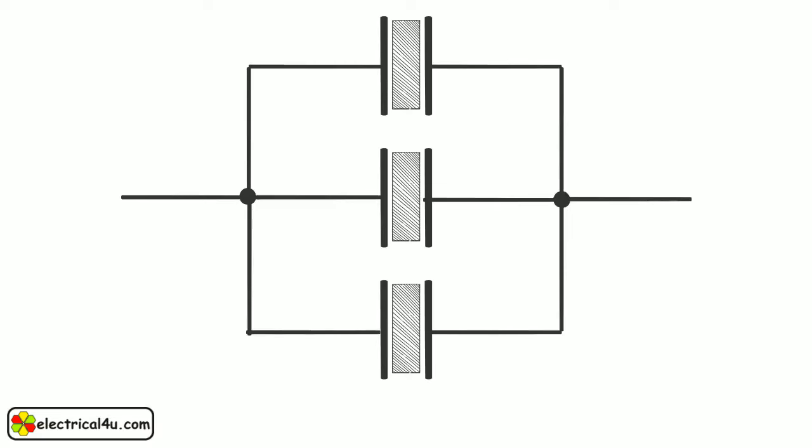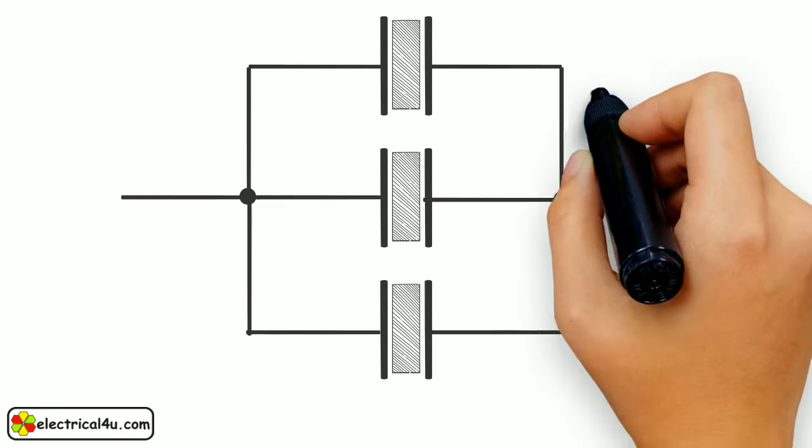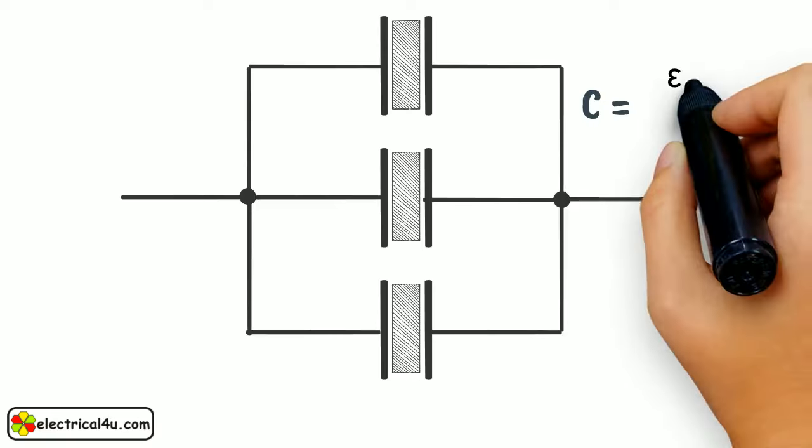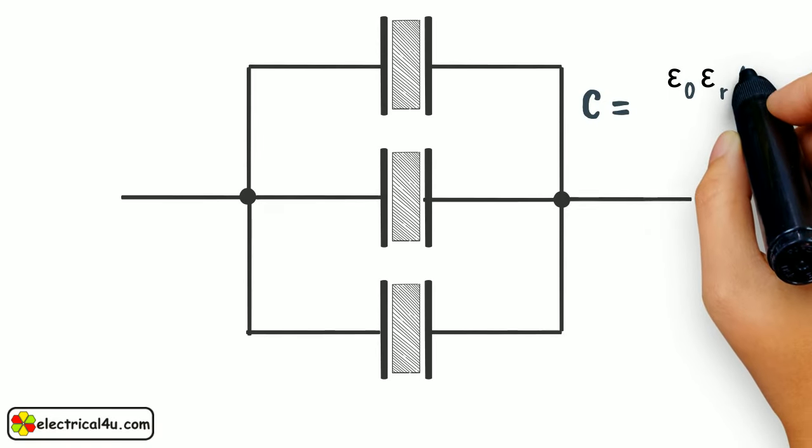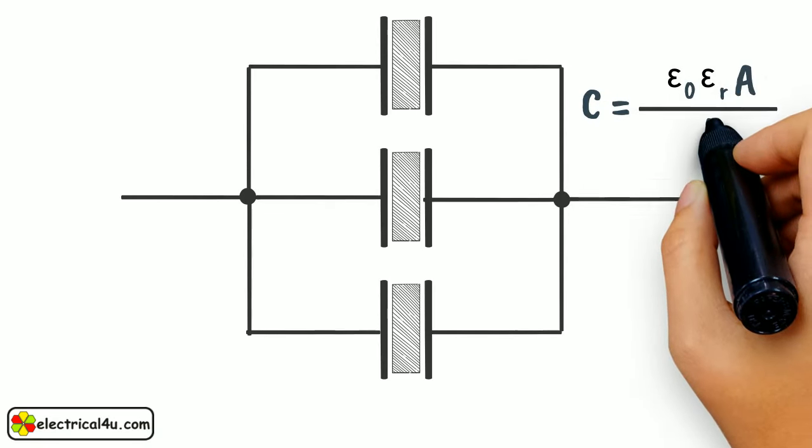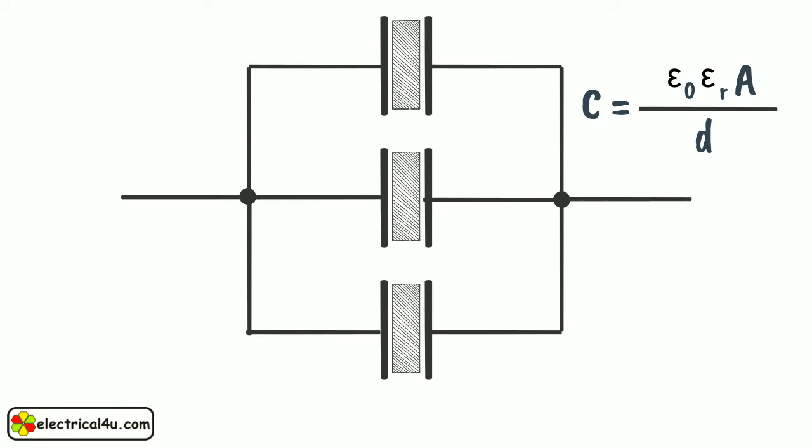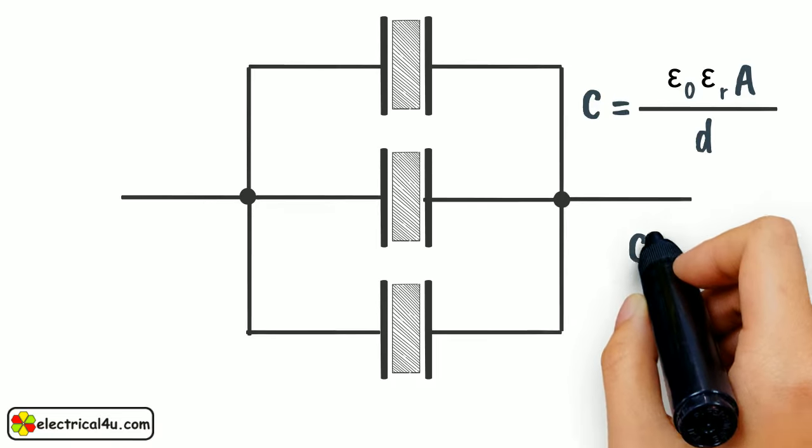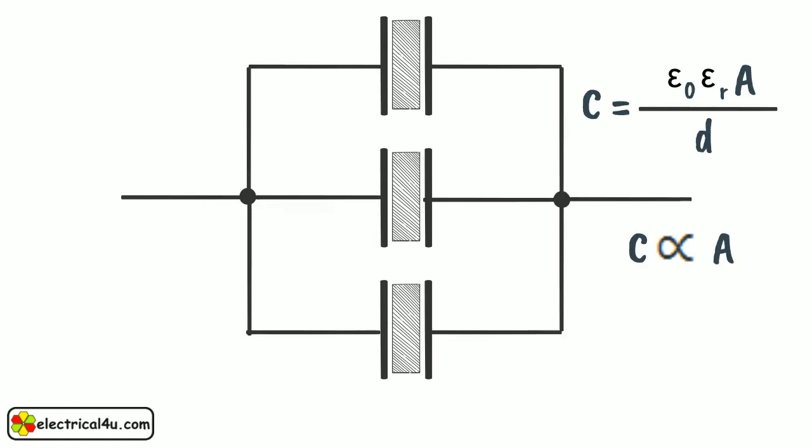The formula of capacitance of a capacitor is C equals epsilon zero epsilon R into A by D, where A is the plate area of the capacitor and D is the distance between two opposite plates in the capacitor. We can see here, the capacitance is directly proportional to the plate area of the capacitor.